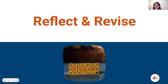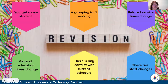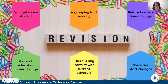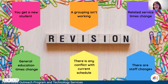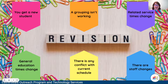Now it's time to reflect and revise. Here are some reasons you might need to revise your schedule: every time you get a new student, you will have to redo a large portion of your zoning plan. If you have a group that's not working, using your grouping tool that Daylene talked about earlier, you would want to update that. If you have any changes in your related services times, those would definitely need to be updated, and if there are changes in your general education time, make sure that's reflected.